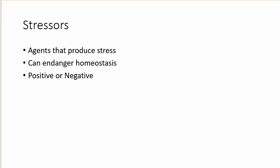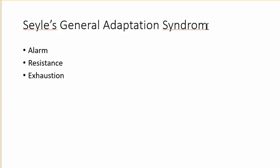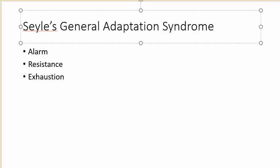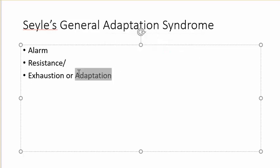Stressors are agents that produce stress — they can endanger homeostasis and can be positive or negative. Risk factors are conditions or situations that increase the likelihood of encountering a stressor. Selye's General Adaptation Syndrome involves three stages: alarm, resistance, and exhaustion. Resistance does have some adaptation involved in it.